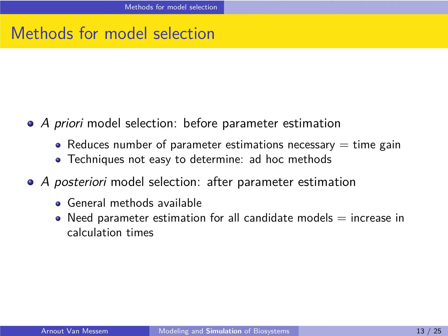In a sense it is easier to select a model a posteriori, because for this kind of selection there are general methods and criteria available that can be followed. However, the disadvantage is that you need to perform a parameter estimation for all of the candidate models, which will increase your calculation time.